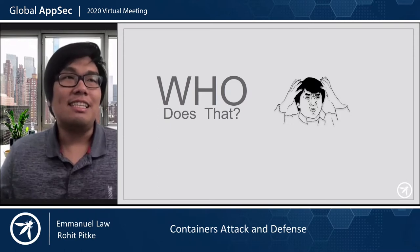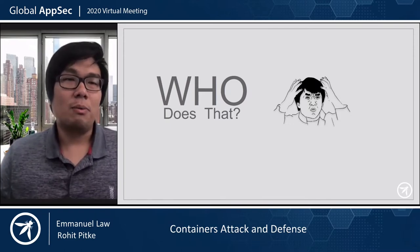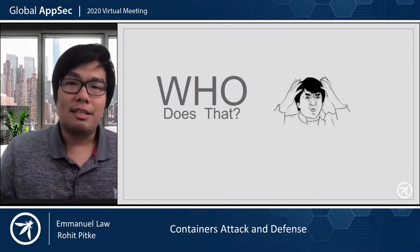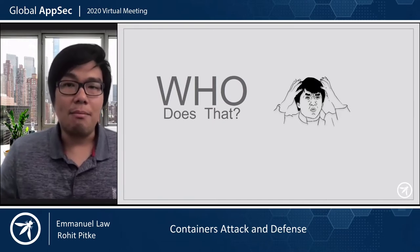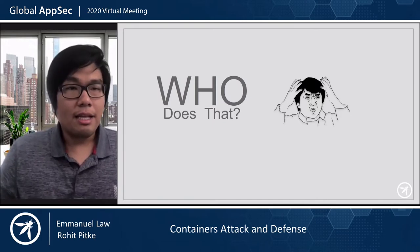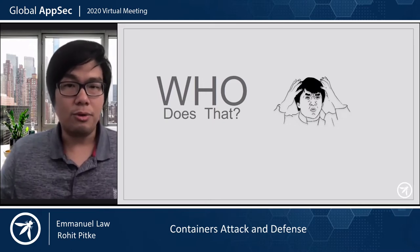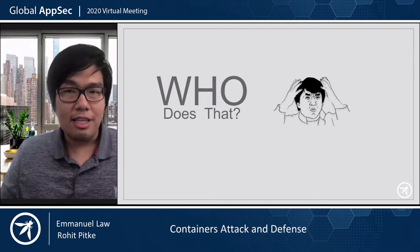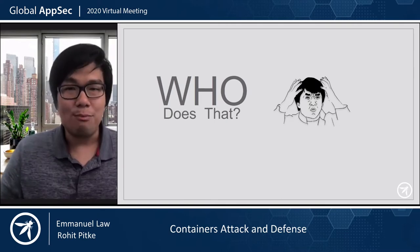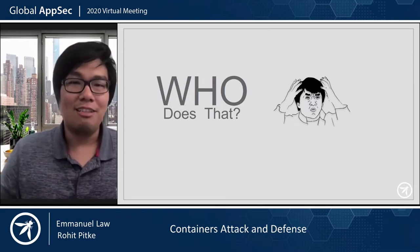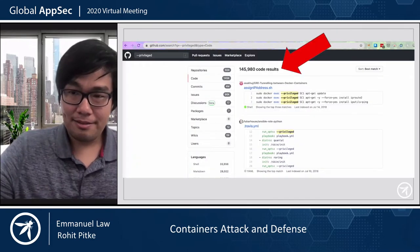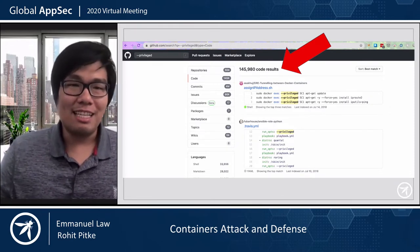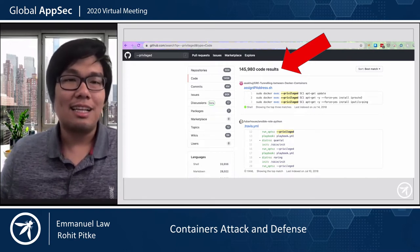Now you know it's trivial to break out of a privileged container — you've got to be wondering who actually runs containers in privileged mode. This is more common than you think. When you run a tool in a container, say TCPDump, and want to use certain configurations, some Docker default restrictions stop you. The proper way is to figure out what Linux capabilities you need, but you can just run in privileged mode and everything works. Humans tend to choose the path of least resistance. If you do a quick search on GitHub, you'll find about 140,000 containers running in privileged mode.